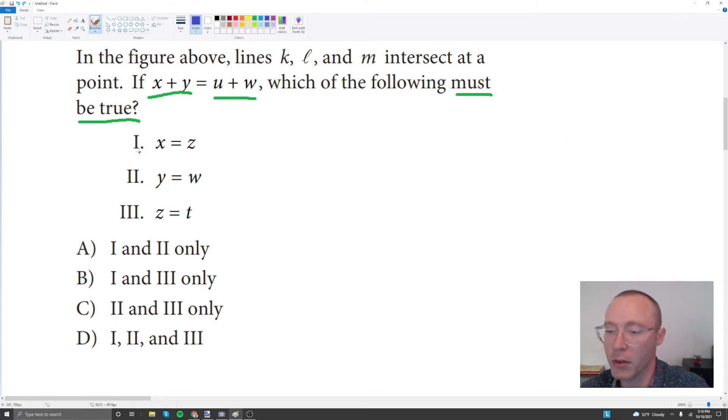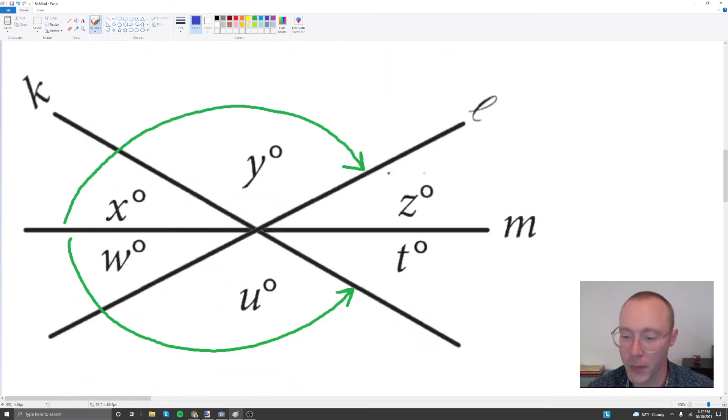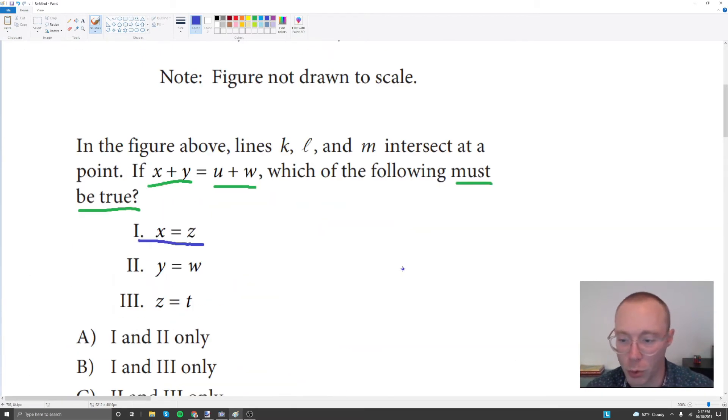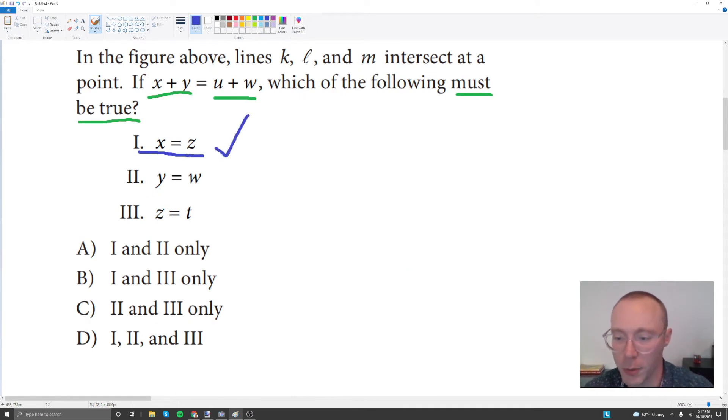Let's start with angle x equaling angle z and see if that's going to be true in both alternative drawings. So here we have angle x and angle z, and those are going to be congruent since we're moving lines k and l in exactly the same way. In our second drawing, angle x and angle z are also congruent for the same reason. This means that Roman numeral one checks out, and this must be true.